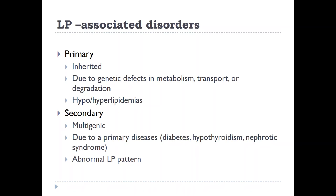There are a few disorders associated with defects in lipoproteins, classified into two categories. First, the primary type, which are inherited and due to genetic defects in the metabolism, transportation, or degradation of lipoproteins, resulting in either hypo- or hyperlipidemia. Second, secondary lipoprotein disorders, which are usually multigenic and multifactorial — multiple genes and environmental factors contribute. These are usually due to a primary disease such as diabetes, hypothyroidism, or nephrotic syndrome, and instead of simple hyper- or hypolipidemia, they result in an aberrant lipoprotein panel, where some lipoproteins may be increased and some decreased.